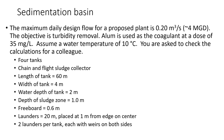We have a design flow of 0.2 meters cubed per second, about 4 MGD, and the objective is turbidity removal. Alum is used as the coagulant at a dose of 35 mg per liter. Assume a water temperature of 10 degrees C, and you're asked to check the calculations for a colleague. The flow is divided into four tanks. We're told there's a chain-and-flight sludge collector. We're given the length, width, water depth of the tank, sludge zone depth, freeboard, and information about the launders.